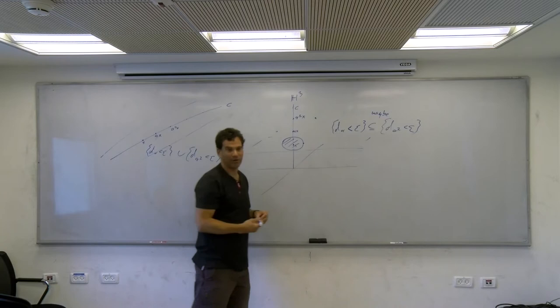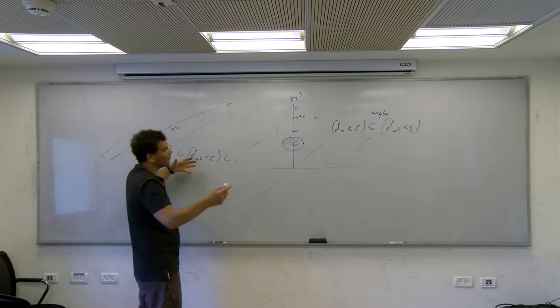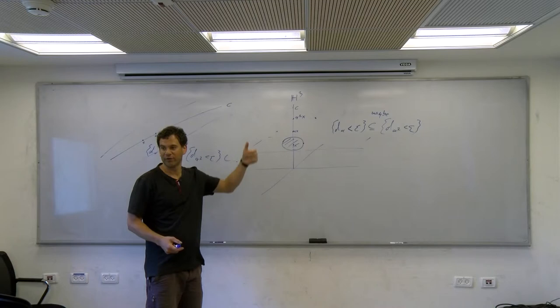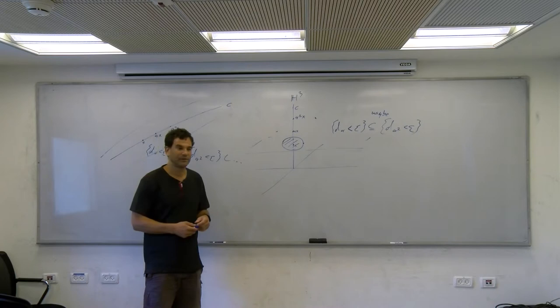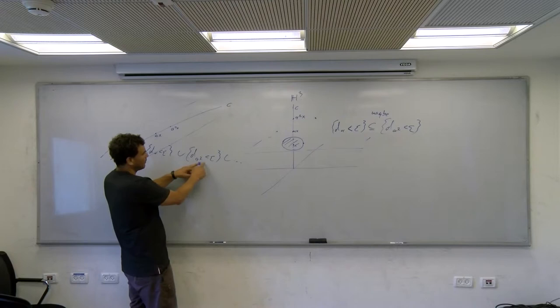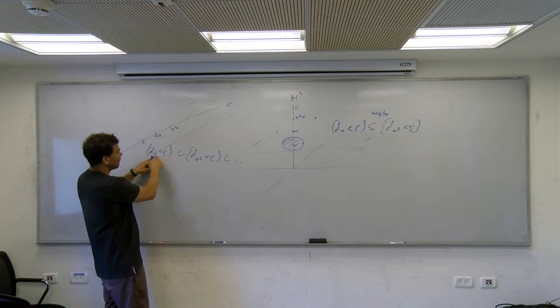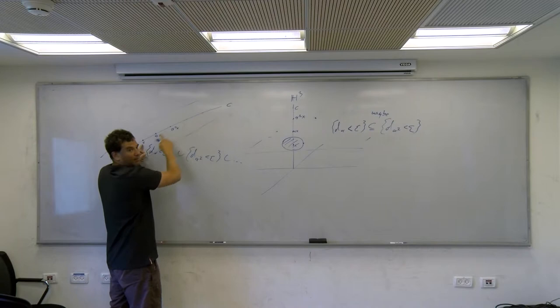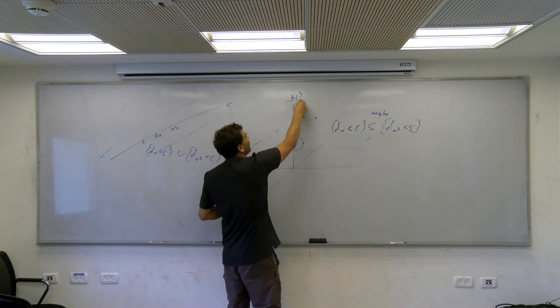Maybe one power gives a bigger disc or the second one is bigger — it's not true that the first is always the largest. But they are all circles and the union of finitely many of them will be a Euclidean disc neighborhood of the geodesic. The union is finite because at some point the displacement of alpha^n is already bigger than epsilon on the axis.